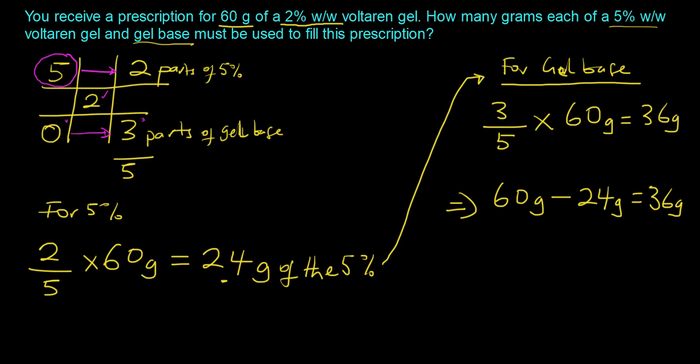You want to notice that there are no negatives on this allegation grid. It's all the absolute value, and so the way you'll find the quantity of the 5% is basically to take the parts of the 5%, which was 2, divide that by the total parts, which is 5, and multiply by the total quantity, and that gives us the 24 grams. The question requires us to find the quantity for the gel base as well, so we could basically repeat the process, take the parts of the gel base, which was 3, divide that by the total parts, and multiply by the total quantity, and that gives us 36 grams.